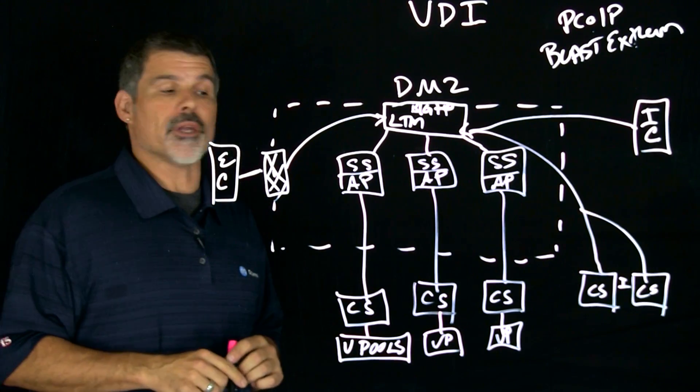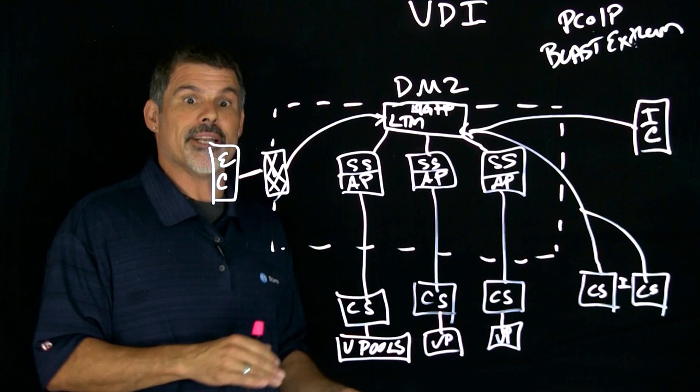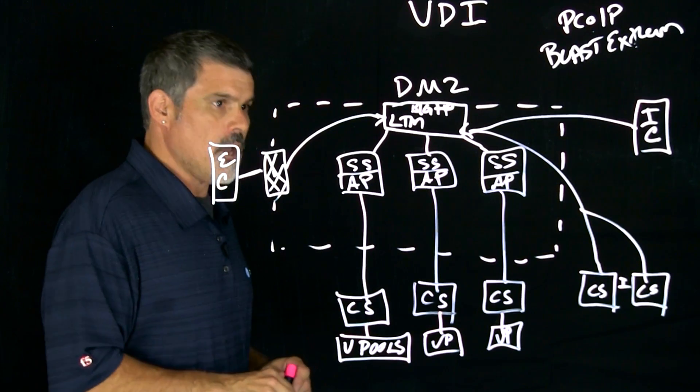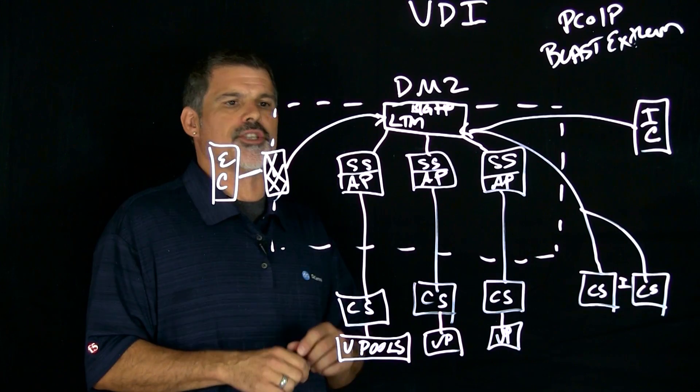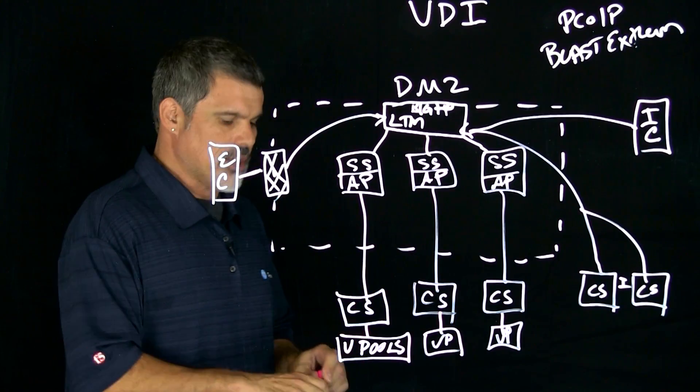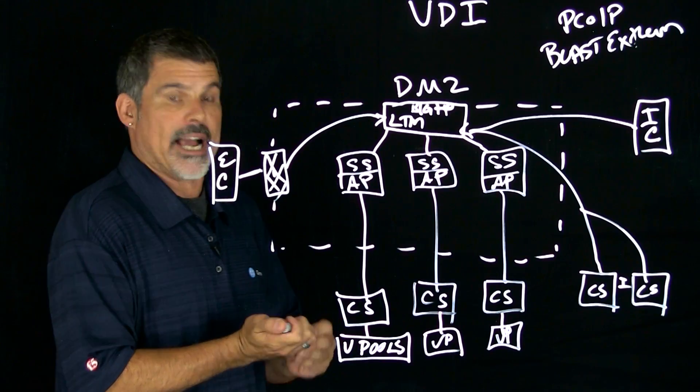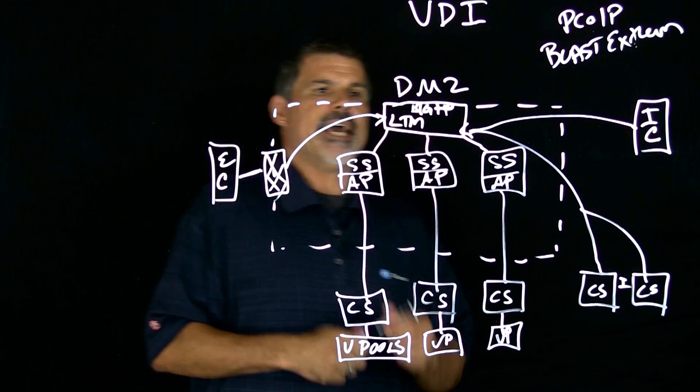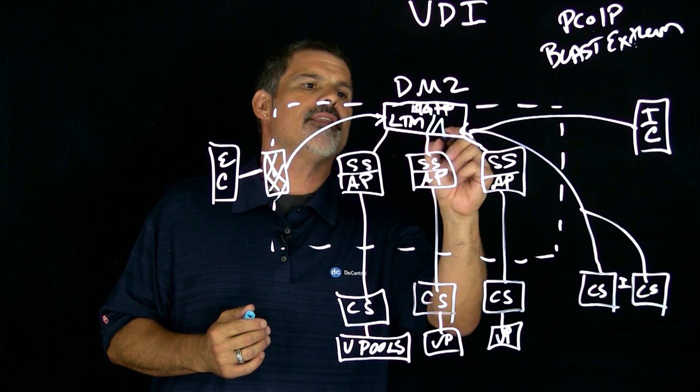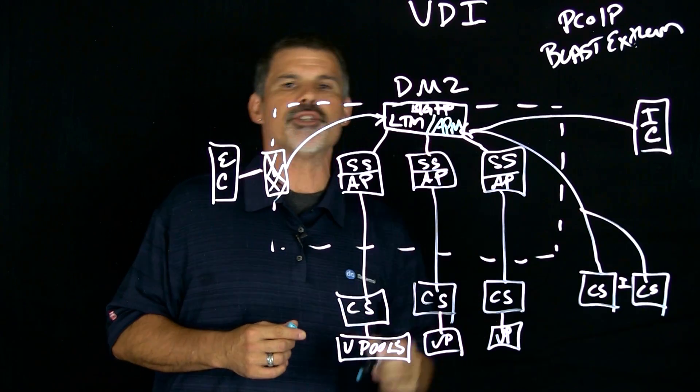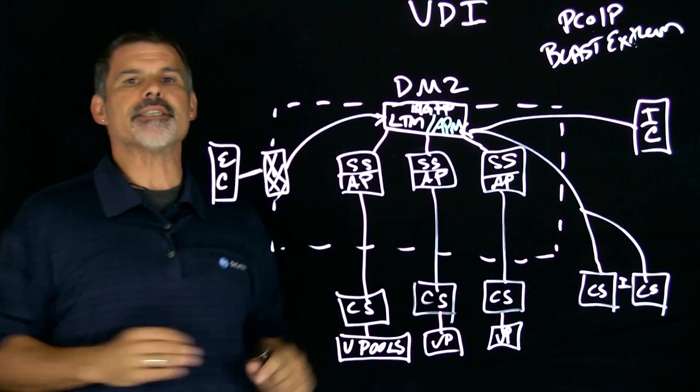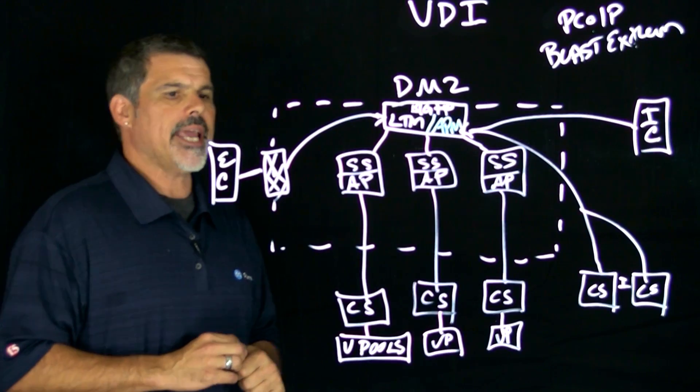Now, usually here on lightboard lessons, we do a lot of drawing as you see, but this one, I'm actually going to be doing some erasing. So how can Big IP also help consolidate, secure, and optimize this environment? Well, it's pretty simple actually. On your Big IP, you already have LTM running. All you need to do is add the APM module, access policy manager.